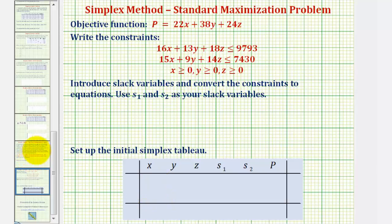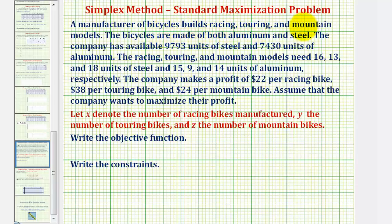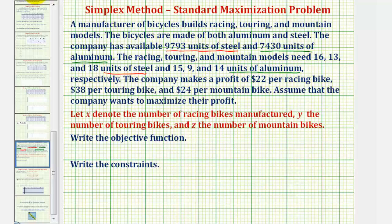Going back to our problem: a manufacturer of bicycles builds racing, touring, and mountain models. The bicycles are made of both aluminum and steel. The company has available 9,793 units of steel and 7,430 units of aluminum. The racing, touring, and mountain models need 16, 13, and 18 units of steel, and 15, 9, and 14 units of aluminum, respectively. So each racing model requires 16 units of steel and 15 units of aluminum.